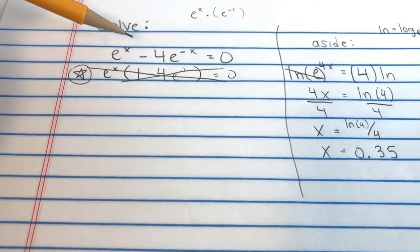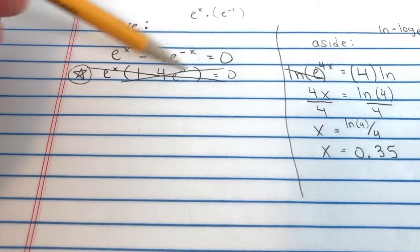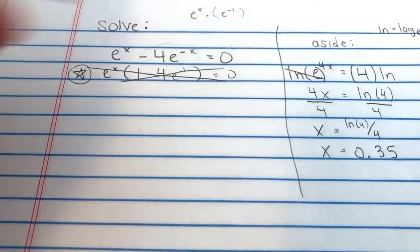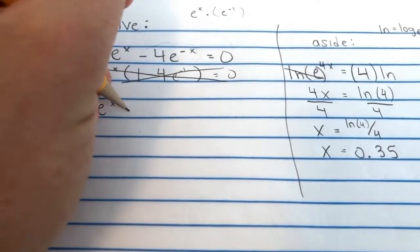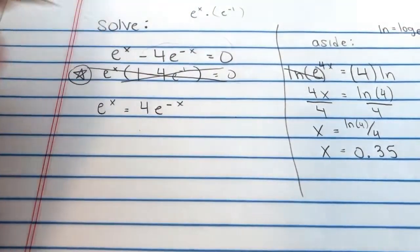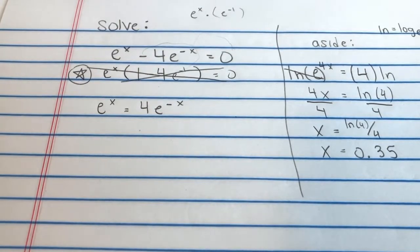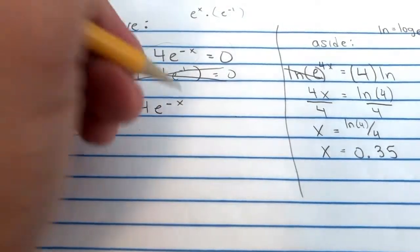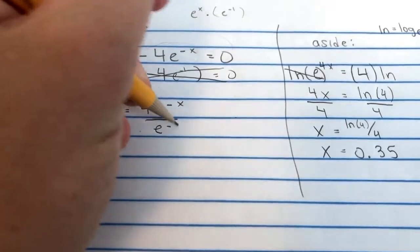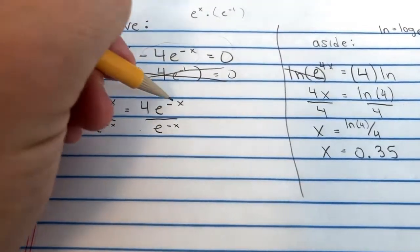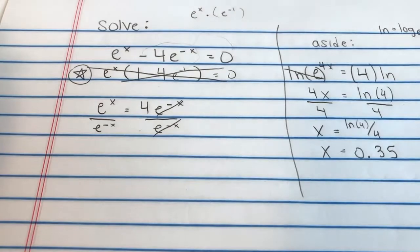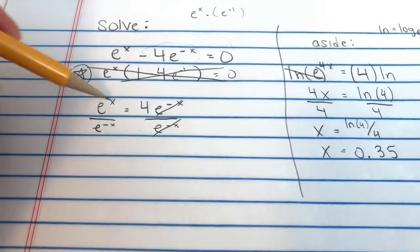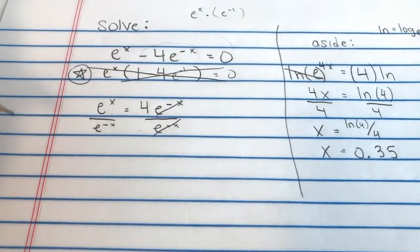So, what we can do, what if we moved this whole term to the right side? So, we'd have E to the x equals 4E to the negative x. Okay? And, like I said, you want to get the E. Now, we have the 4 on one side, which is good. But, let's divide by E to the negative x. Those are now gone.